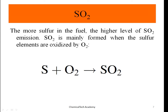The more sulfur content in the fuel, the higher the level of SO₂ emission. SO₂ is mainly formed when sulfur elements are oxidized by O₂. For example, coal has more sulfur content compared to petroleum, so burning coal produces more SO₂.